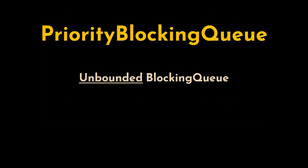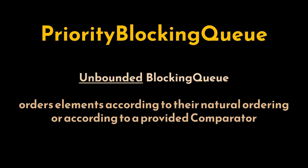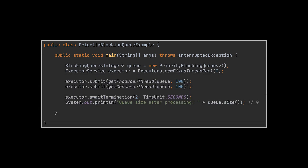Now let's move to the PriorityBlockingQueue. This implementation is an unbounded blocking queue that orders elements according to their natural ordering or according to a provided comparator. Unlike the ArrayBlockingQueue and LinkedBlockingQueue which preserve FIFO ordering, the PriorityBlockingQueue orders its elements based on priority. In this example, the PriorityBlockingQueue automatically orders the elements based on their natural ordering — in ascending order since we are dealing with integers.